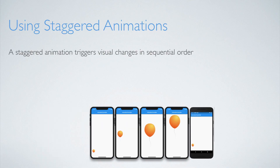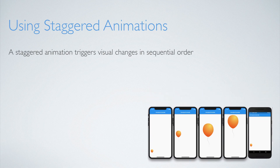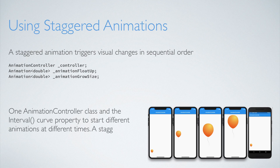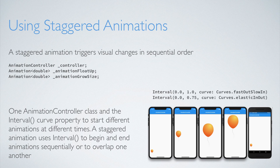A staggered animation triggers visual changes in sequential order. The animation changes can occur one after the other, they can have gaps without animations, and overlap each other. One animation controller class controls multiple animation objects that specify the animation in a timeline using the interval. A staggered animation uses interval to begin and end animation sequentially or to overlap one another.